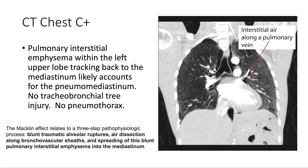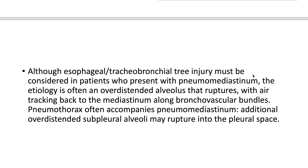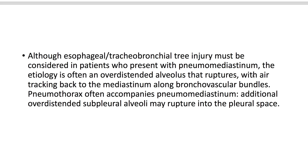The three-step process involves: blunt traumatic alveolar rupture, air dissection along the bronchovascular sheaths, and spreading of this pulmonary interstitial emphysema into the mediastinum. Although esophageal and tracheobronchial tree injury must be considered in patients who present with pneumomediastinum, the etiology is often an over-distended alveolus that ruptures with air tracking back to the mediastinum along the bronchovascular bundles — essentially the Macklin effect.